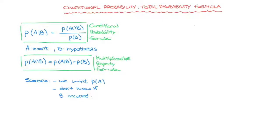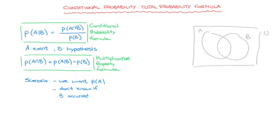Let me start by drawing a typical Venn diagram — the universal set U — in which we have two sets A and B. Looking at this Venn diagram, we can see that there are two ways in which event A can occur. Either event A occurs with event B — that is, event A and B occurs — which corresponds to the region I'm colouring in green. Or the event A and not B occurs, which corresponds to the region I'm colouring in yellow.